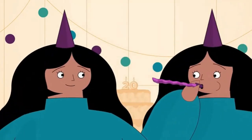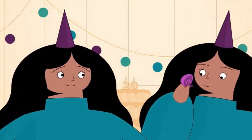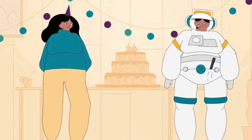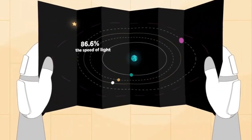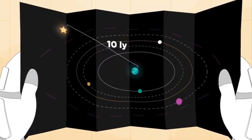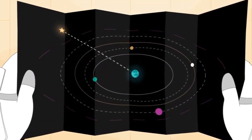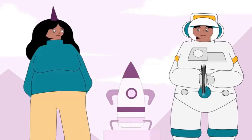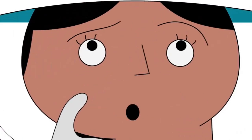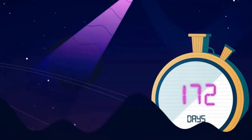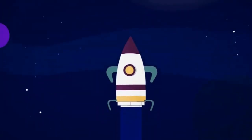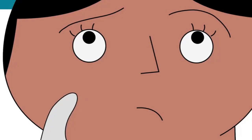Here's a clear example to illustrate time dilation. Imagine two identical twins, Alice and Sarah. Alice stays on Earth while Sarah boards a spaceship capable of traveling at an extremely high speed approaching the speed of light. Sarah sets off on a round trip to a distant star system and then returns to Earth. Due to the effects of time dilation caused by traveling at near light speeds, Sarah experiences time passing more slowly relative to Alice on Earth.